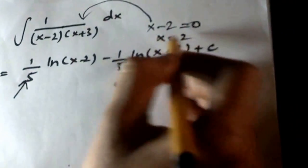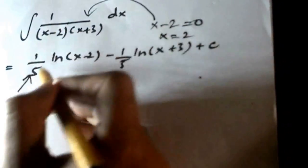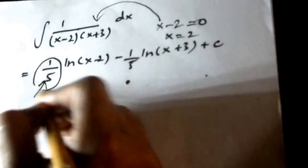So when I put x is equal to 2 in the equation I will get 1 by 5 and it will be my coefficient.